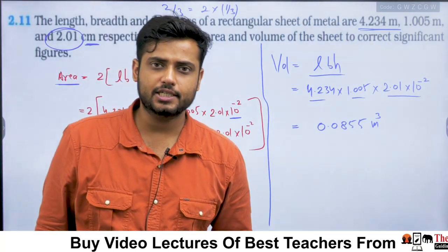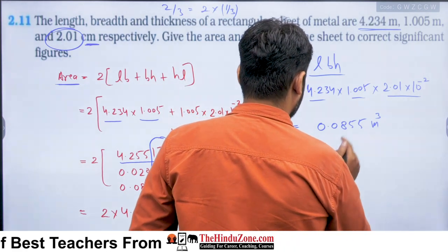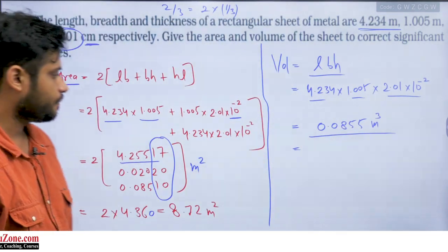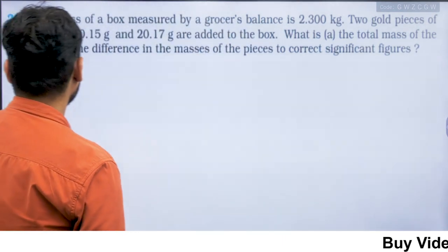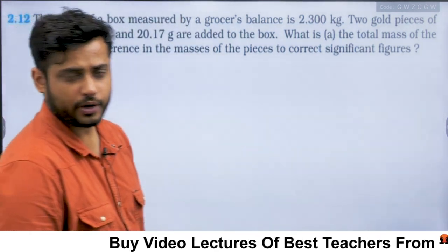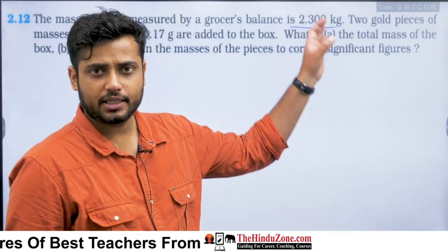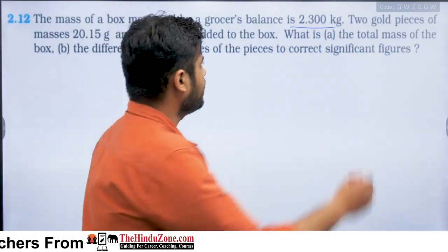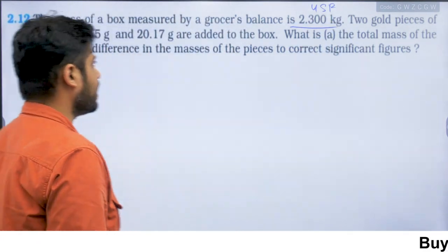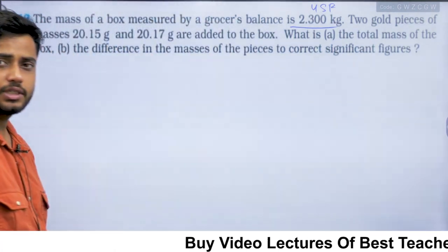When we change our unit, we should not change the number of significant figures. For example, a balance reads 2.300 kg. In a decimal number, trailing zeroes are significant — here there are 4 significant figures. If you want to know the rules for counting significant figures, you can see the playlist.